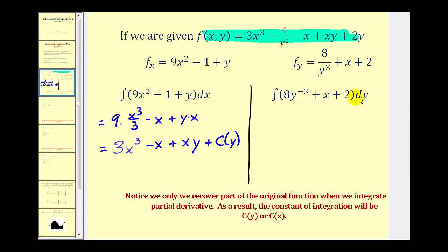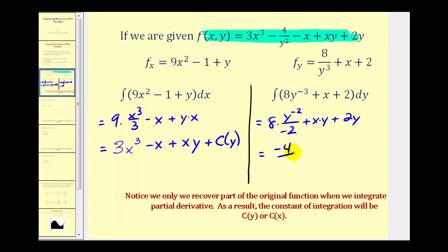Now we're going to integrate this with respect to y, again treating x as a constant. So here we'd have 8 times y to the negative 2 divided by negative 2, plus x times y, and this would be plus 2y. Simplifying, this would be negative 4 over y squared plus xy plus 2y. Comparing this function to the original function, notice we're missing some of the x terms, so our constant of integration will be c of x.